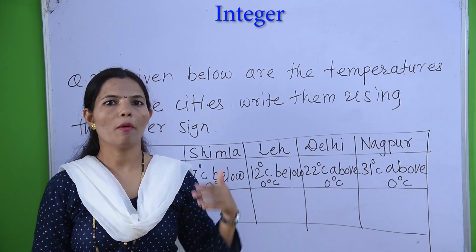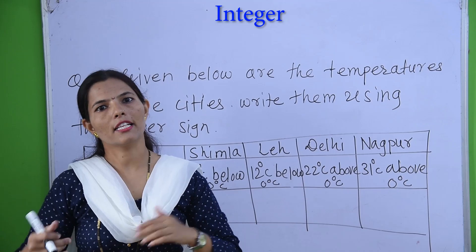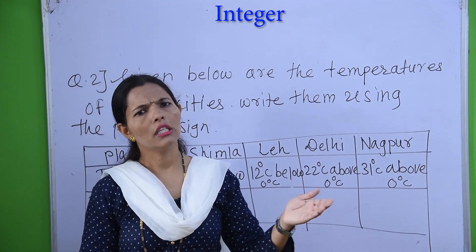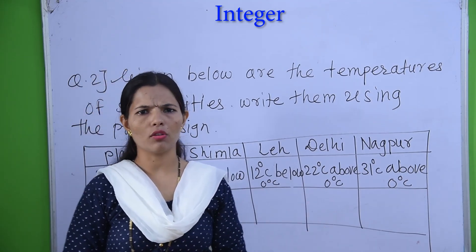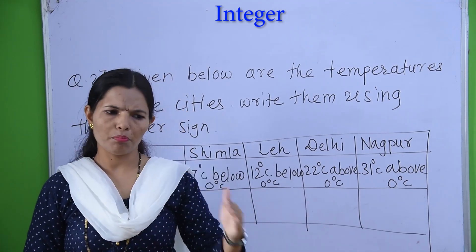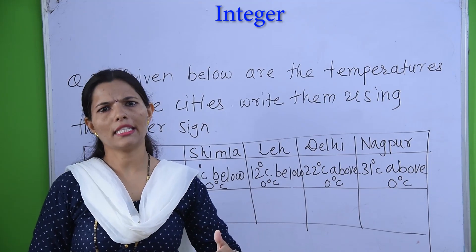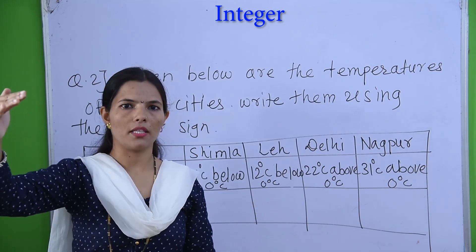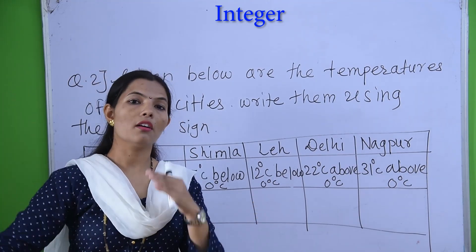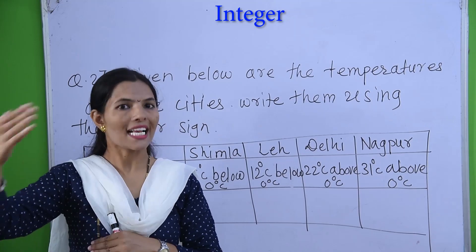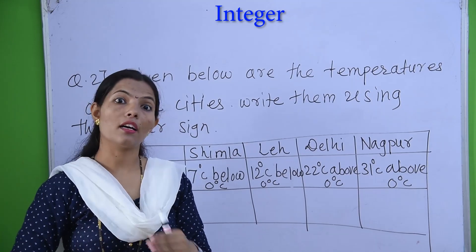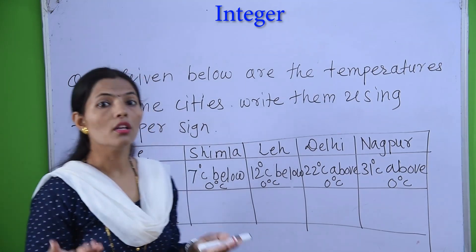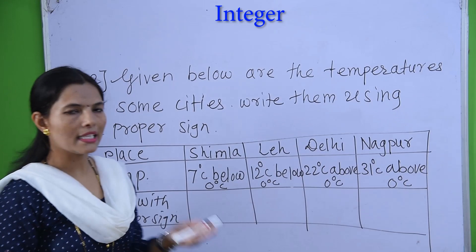When we go to places like the North Pole or South Pole, the temperatures are very low. How does temperature become negative? When it goes below 0 degrees, it becomes negative. And when the temperature is above 0 degrees, we write it as positive — we use the plus sign.